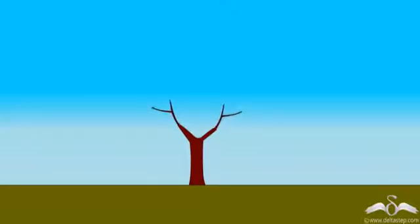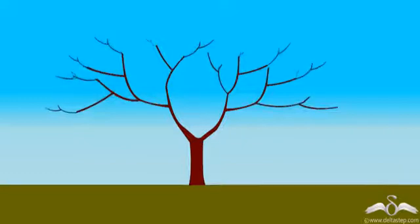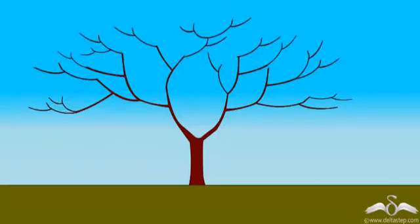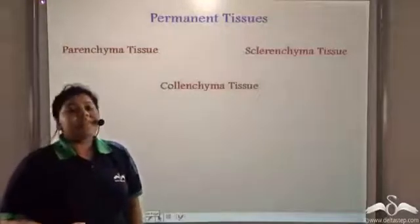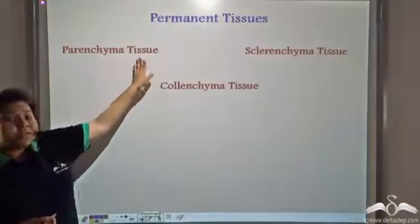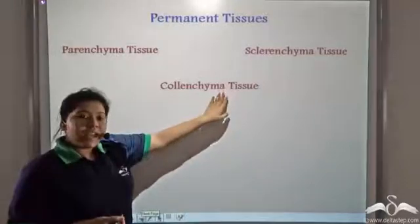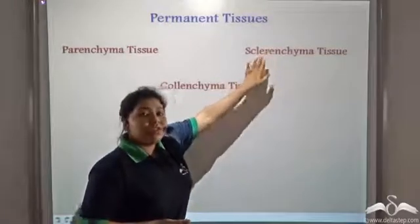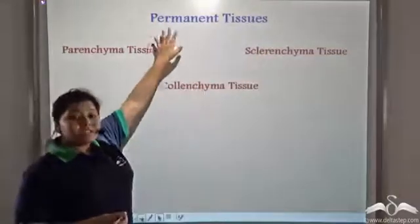A young sapling with thyme grows into a bigger plant. So what is supporting this plant so that it can stand erect on the soil? Well, the tissues that make up the plant, namely the parenchyma tissue, the collenchyma tissue, and the sclerenchyma tissue, all of which are permanent tissues.